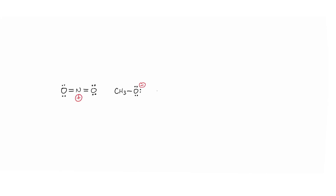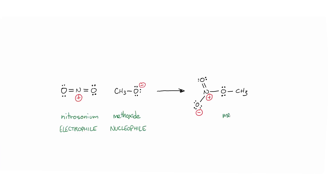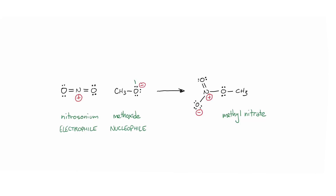Grab your pen again — let's draw those arrows. Here are methoxide and nitrosonium again; they react to form methyl nitrate. Now where should the arrows be drawn to indicate the rearrangement of electrons in this reaction? Remember your answers to the last question and look carefully at this product structure. The first arrow should be simple: electrons go from where they are to where they're not. That means starting on a lone pair on the negative oxygen atom in the methoxide nucleophile and ending at the positive charge on the nitrogen in the nitrosonium electrophile, forming a new N–O bond. The methoxide-oxygen lone pair has been directed by the arrow and turned into this bond pair.